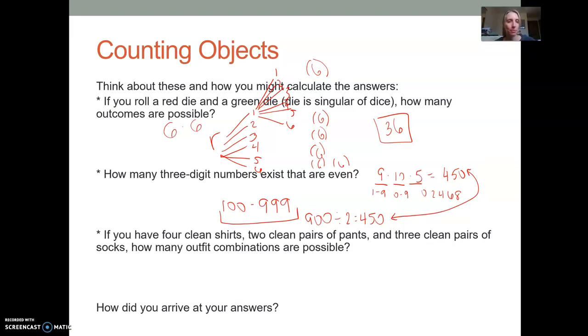Our last example, if you have four clean shirts, two clean pairs of pants, and three clean pairs of socks, how many outfit combinations are possible? So for shirts, you have four options. For pants, you have two options. And for socks, you have three. So what would we do here? Well, it's kind of the same idea. You have four possibilities. Each one of those four would have two pairs of pant options. And then each of those would have three. So really what we want to do is we want to multiply four times two times three, which is 24. So there would be 24 outfit options for this last thing.